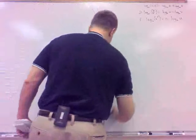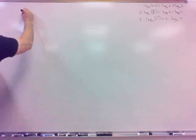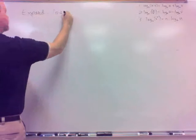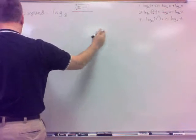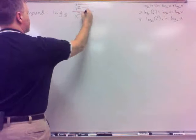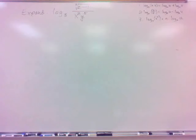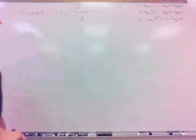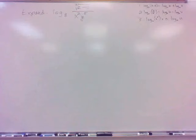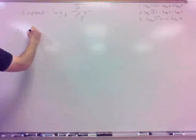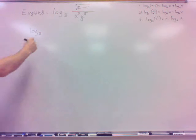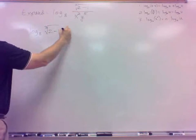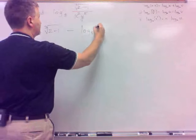One more: expand log base 8 of the cube root of (Z minus 1) over X squared Y to the fifth. I've got division, so division turns into subtraction: log base 8 of the cube root of (Z minus 1), minus log base 8 of X squared Y to the fifth.